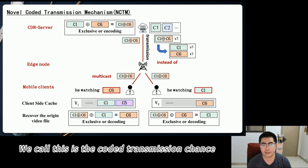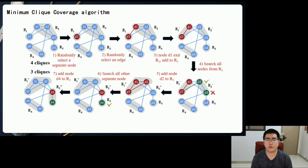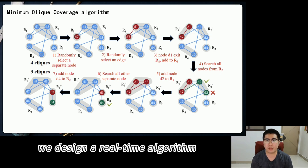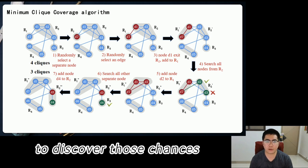We call this the coded transmission chance. In our work, we design a real-time algorithm, the minimum clique coverage algorithm, to discover those chances.